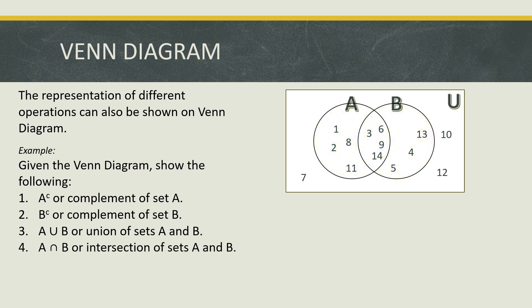How about A intersect B? Take note that to get the elements of the intersection of sets, we just need to get the elements that are the same in both sets. Set A intersects with set B, and the shaded part shows only the overlapping region. So we have A intersect B, and the elements are 3, 6, 9, and 14. That is the intersection of circle A and circle B.